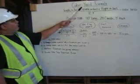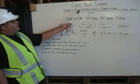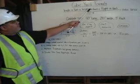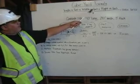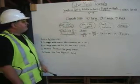Cubic yard formula: length in feet times width in feet times height in feet, over 27, equals cubic yards.